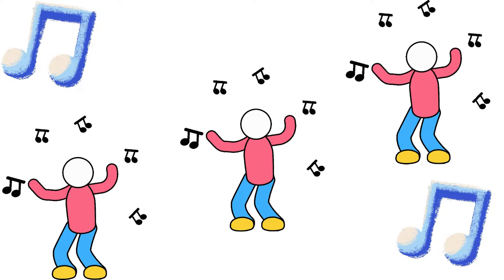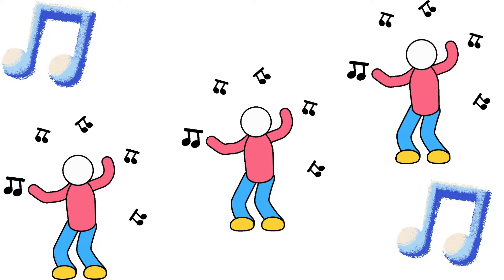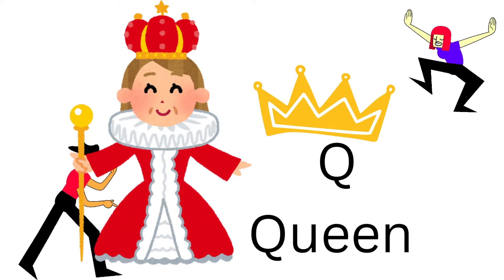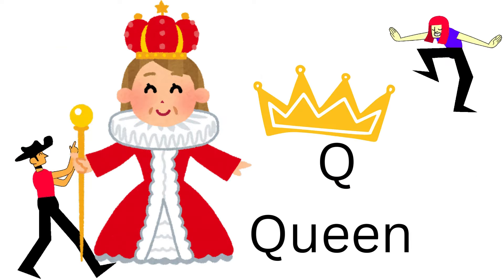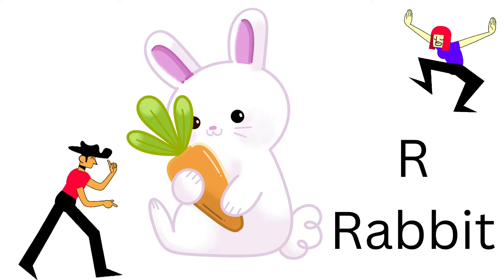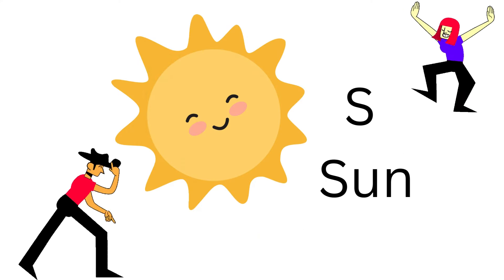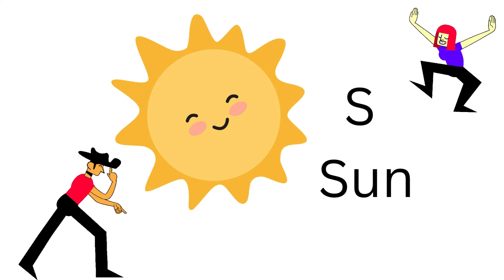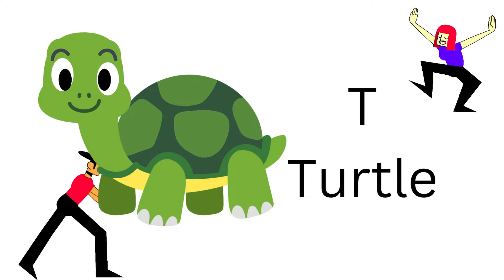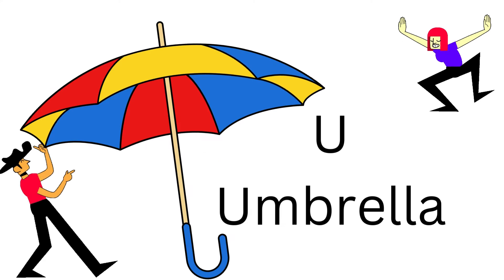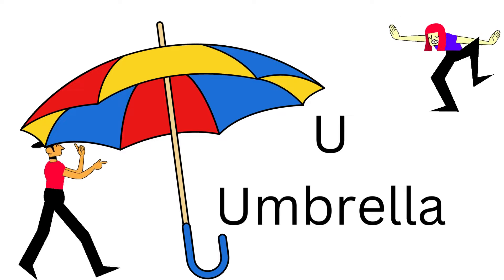Ding, dang, dong, this is the alphabetical song. Ding, dang, dong, come and sing along. Q's for the queen with her crown. R's for the rabbit always on a quest. S's for the sun shining so bright.